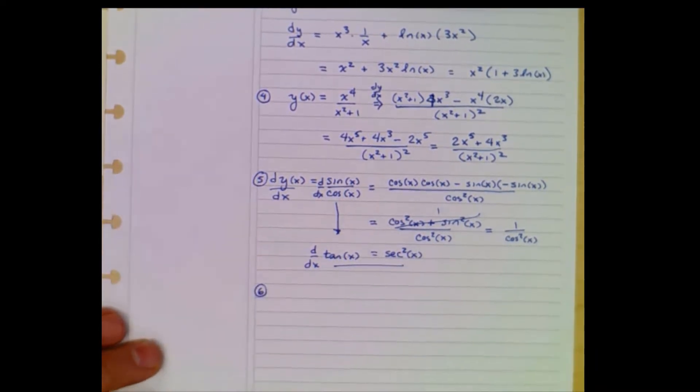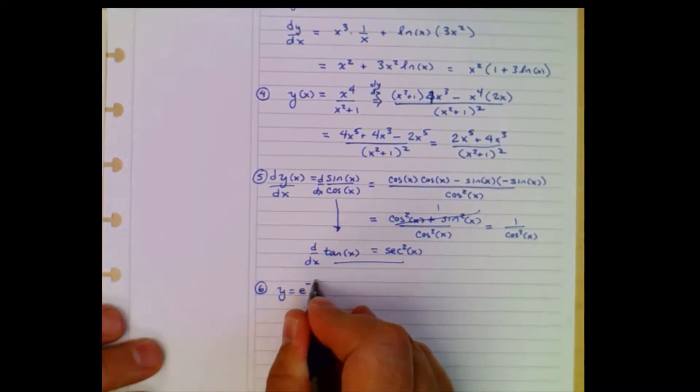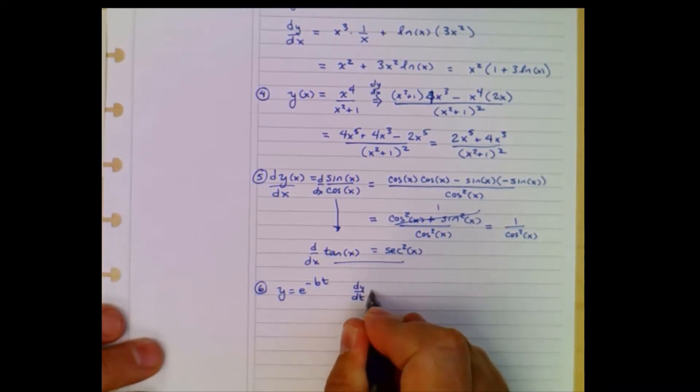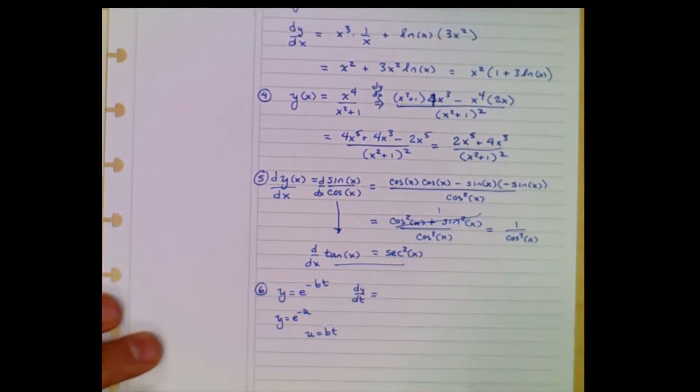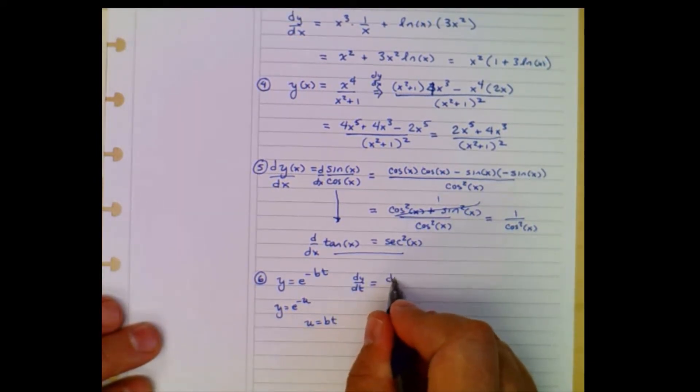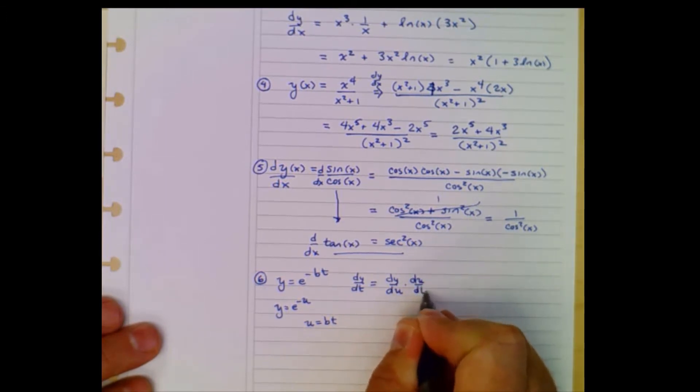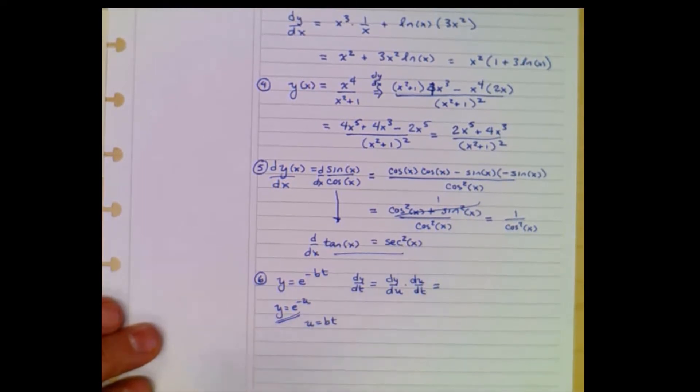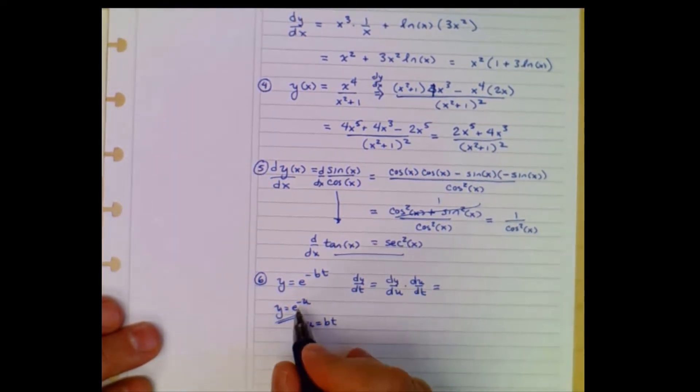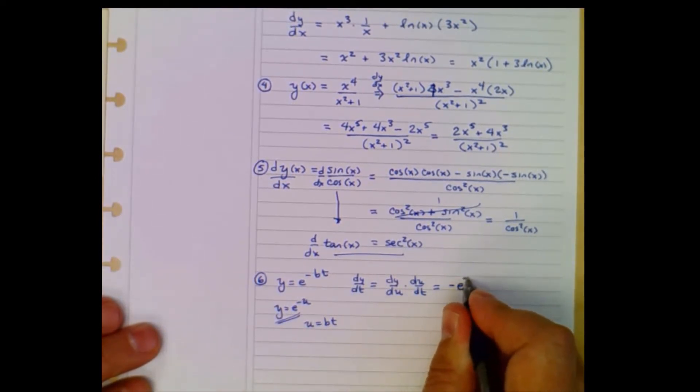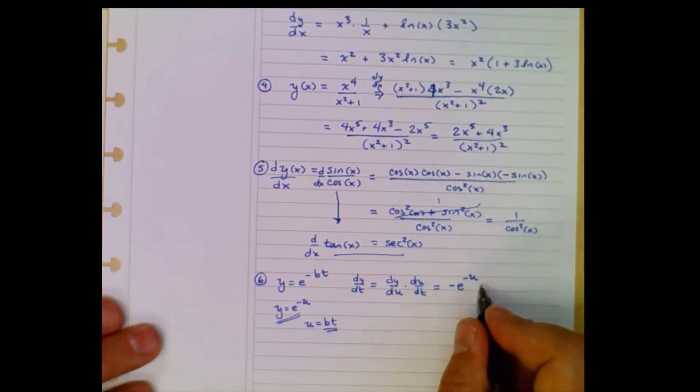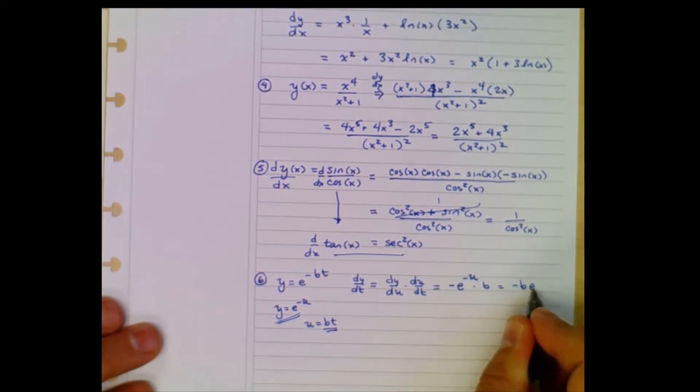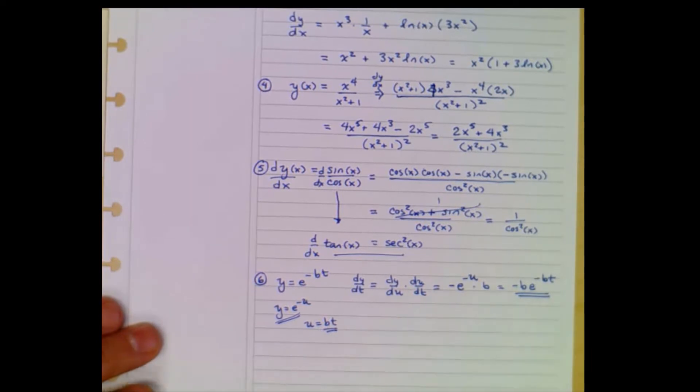A couple more. Let's take six. Number six, let y equal e to the minus bt. And I want to know dy dt. Well, this is a chain rule application. We have y equals e to the minus u and u equals bt. So that means we need dy du times du dt. Well, dy du, the derivative of that expression, e to the minus u with respect to u. I pull a minus sign down. Minus e to the minus u. And then I need to multiply by the derivative of that with respect to t. That's just b. So this is minus b e to the minus bt.